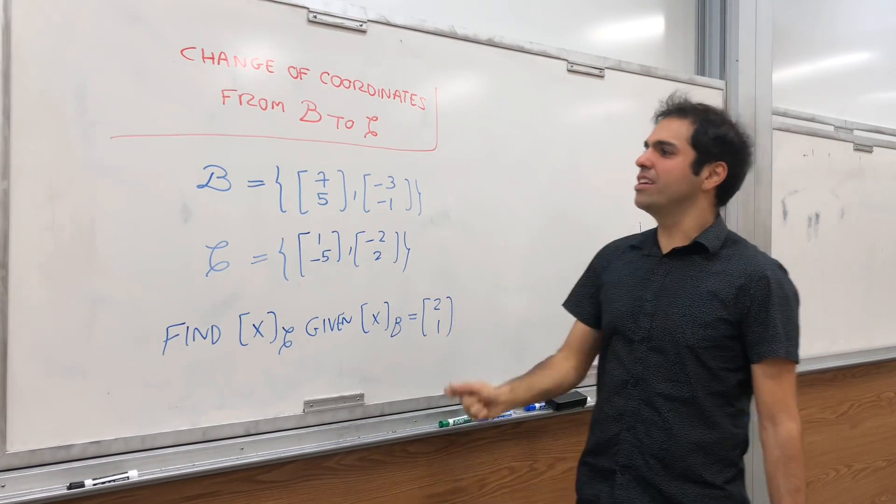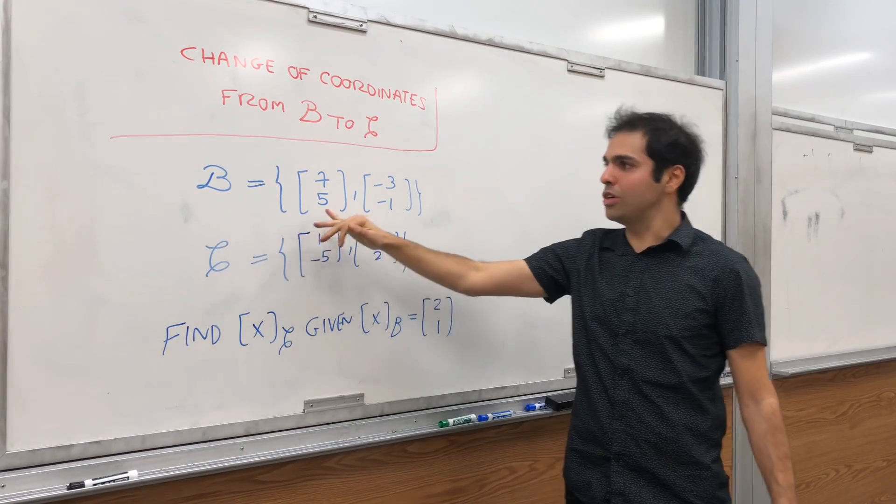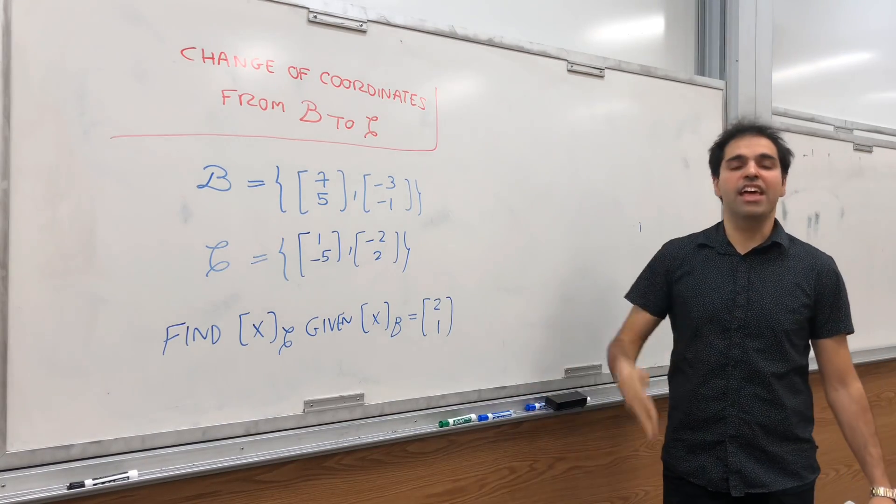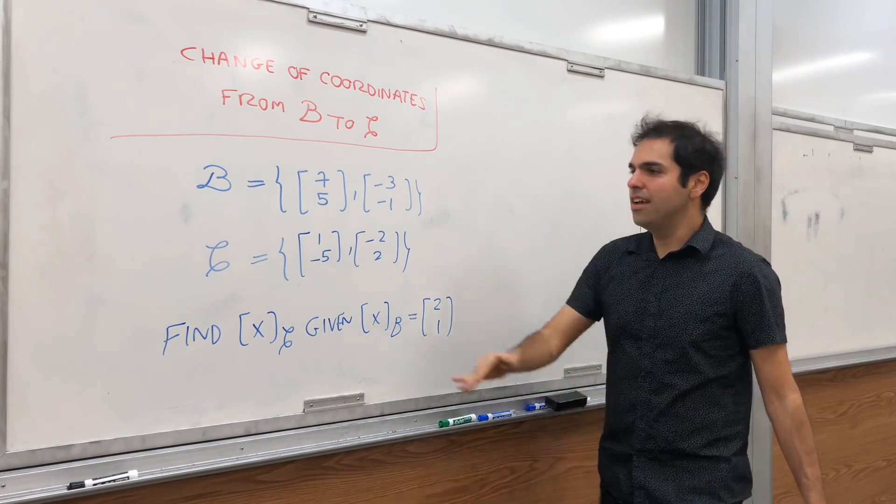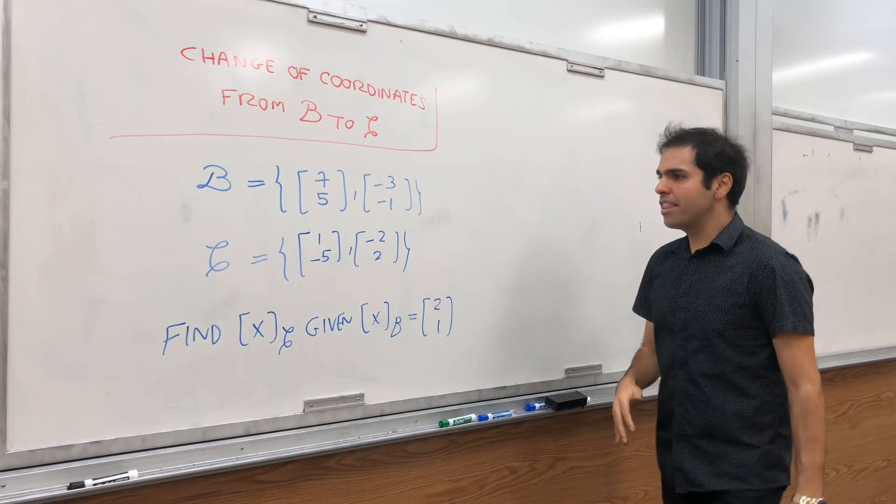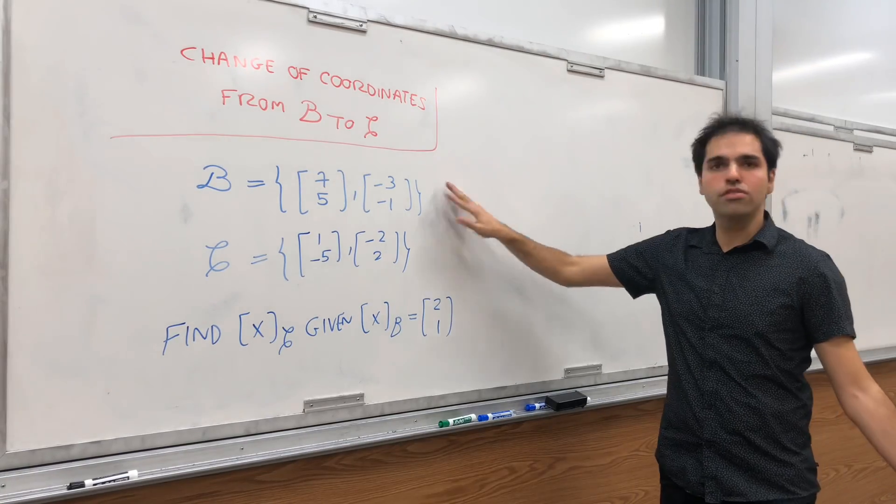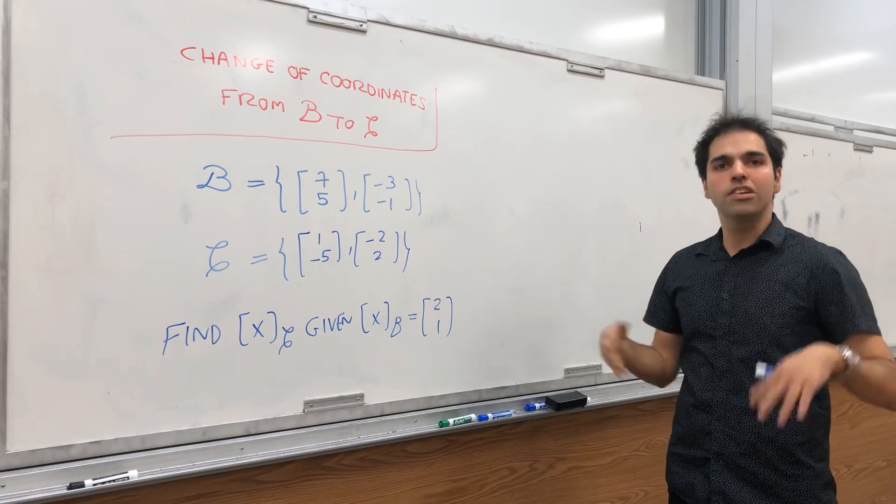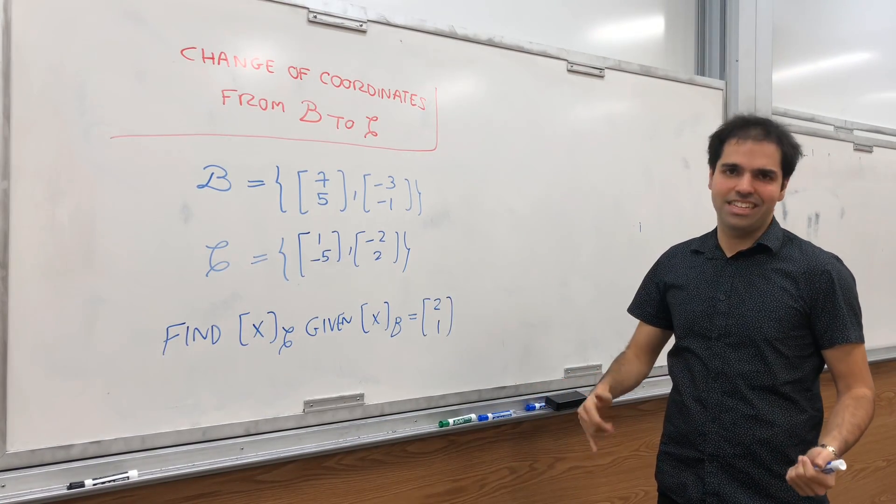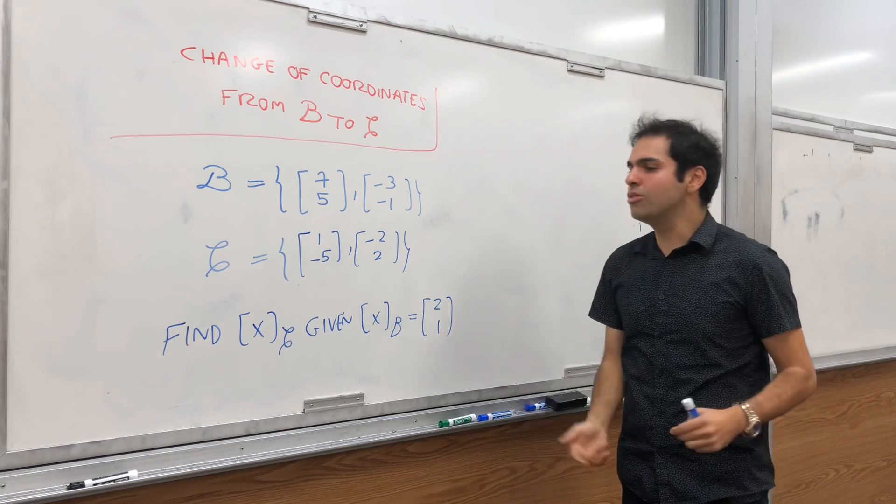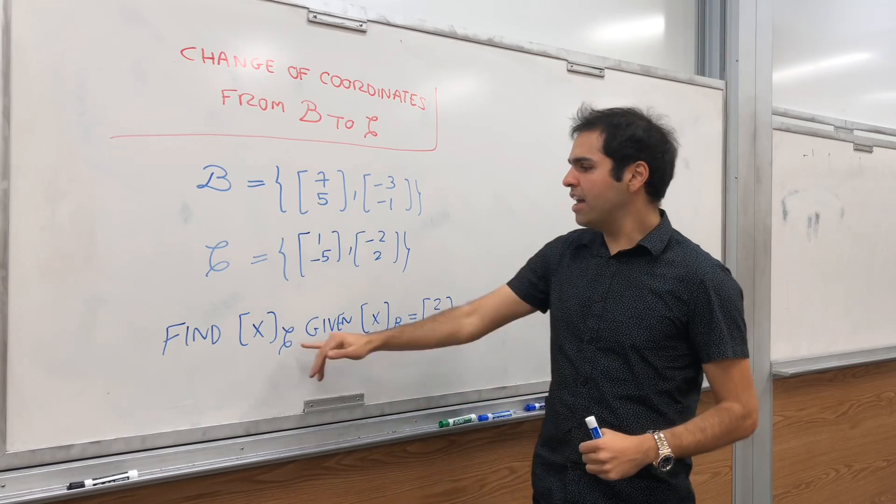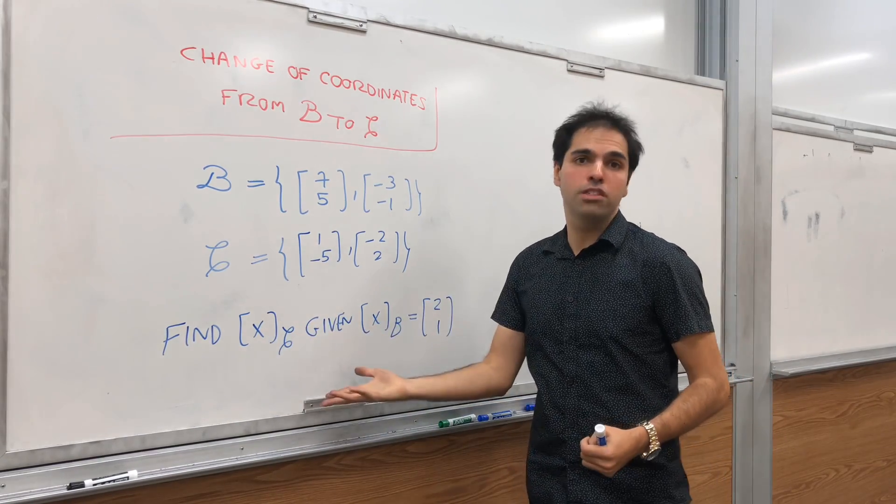So what do we want to do? Suppose you have a basis for R2, which is given like this one, and you find it's kind of outdated, and you would like to work with a different basis. Say with a basis C, which is given by this, then the problem is if you started with B, you had all your coordinates, you know, XB, and now you have to update them and find XC. And this is what we want to do today, given that the coordinates of X with respect to B are 2, 1, find the coordinates of X with respect to C.